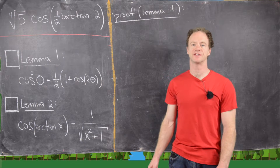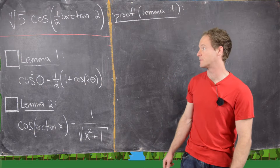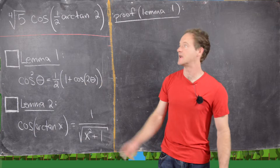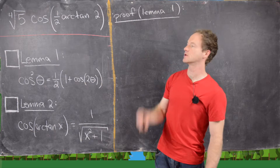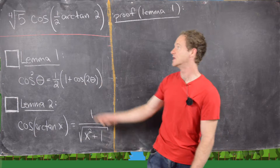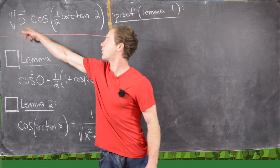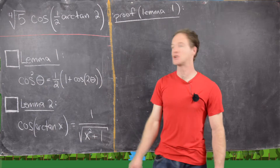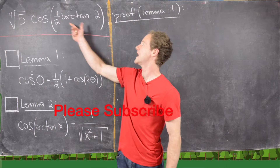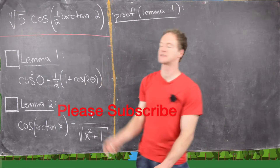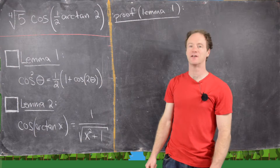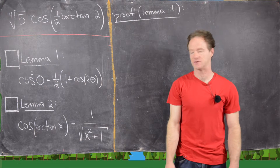In this video we're going to look at an interesting trigonometry problem. What we want to do is find the value of the fourth root of five times the cosine of one-half of arctangent of two — in other words, one-half of the inverse tangent of two — in terms of some nicer expression.